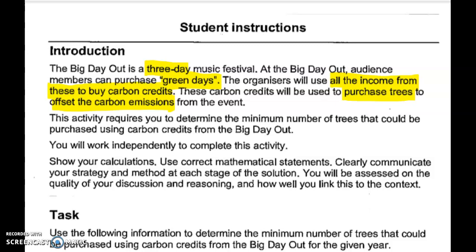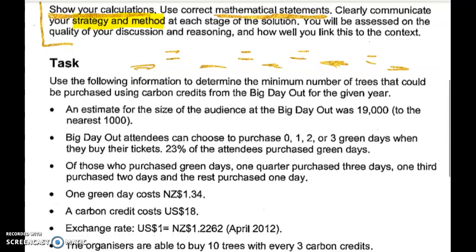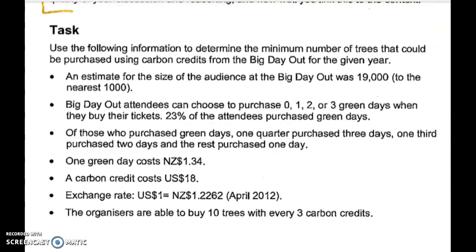What we have to do is work out the minimum number of trees you can buy using the carbon credits. There are also important requirements: you must show your calculations or you will get Not Achieved, you have to use correct mathematical statements — so no running arithmetic where you have equals, equals, equals and the values aren't actually equal — and you have to clearly communicate your strategy and method at each stage, linking it to the context.